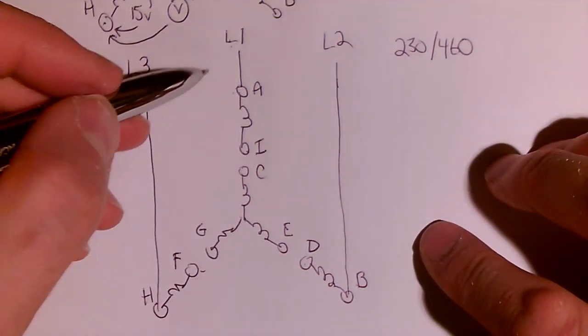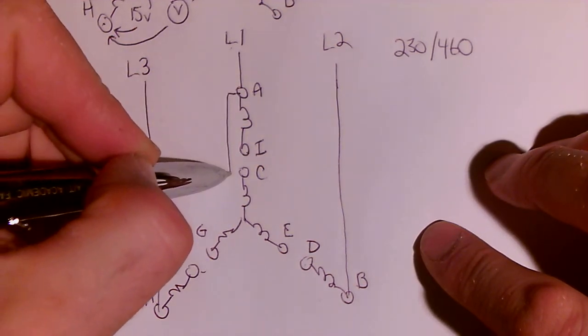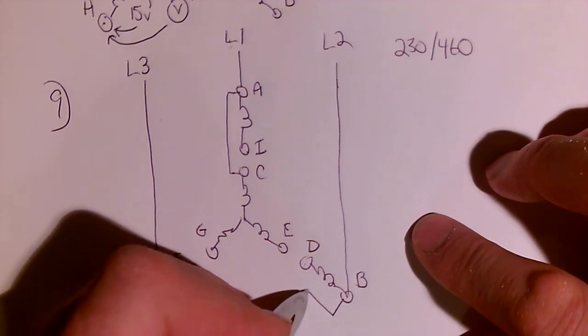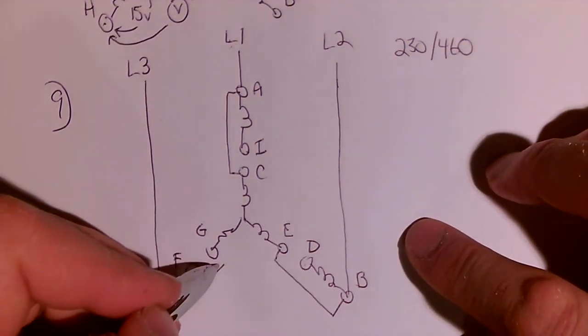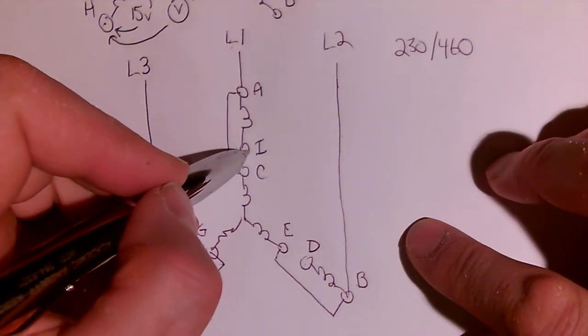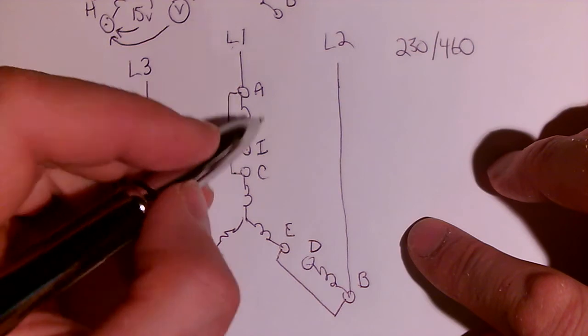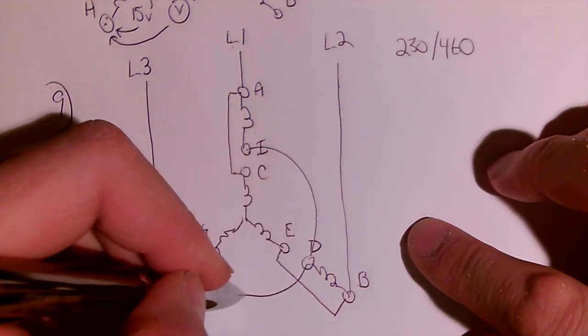And we have to connect this for low voltage. So A is also going to connect to C. Because we want these in parallel. B is going to connect, in this case to E. And H is going to connect to G. And then T4, T5, and T6 are all going to connect together. So you need a jumper from I to D. And a jumper from D to F.